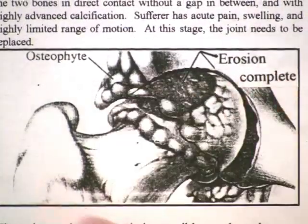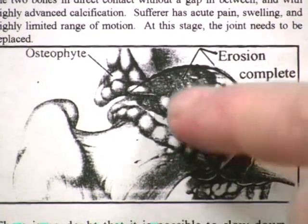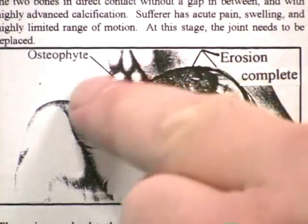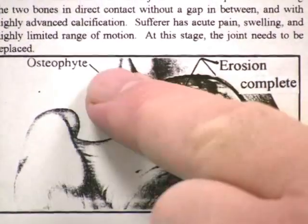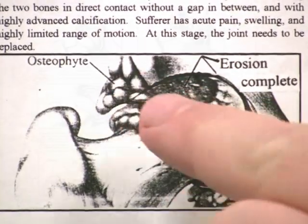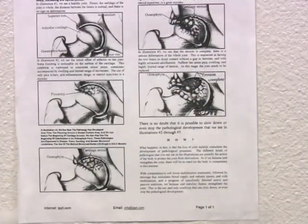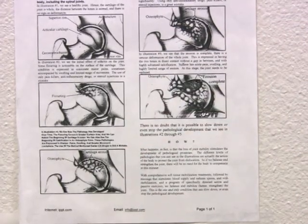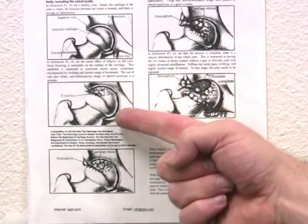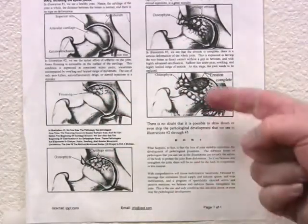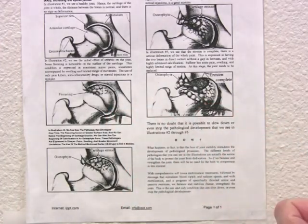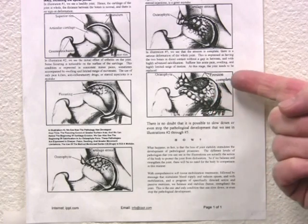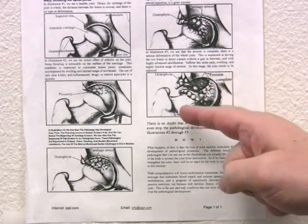On illustration number five, we see complete erosion — this is bone-on-bone, and we see additional bone development: massive osteophytes. The period of development, meaning the progress of this pathology, from illustration two to illustration five can take a few decades. In this case, what we see on illustration five requires replacement — no doubt. It is very difficult to help at this stage.